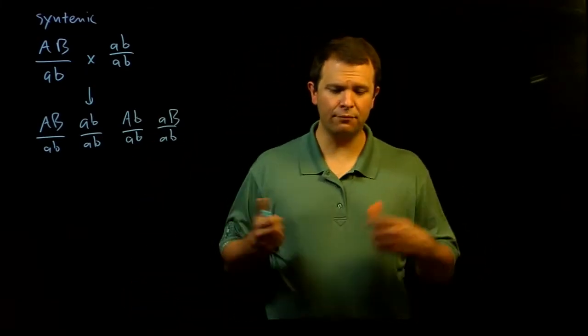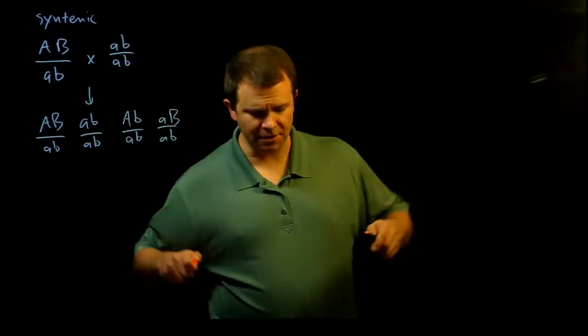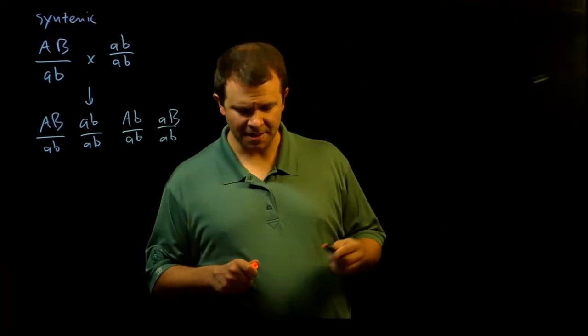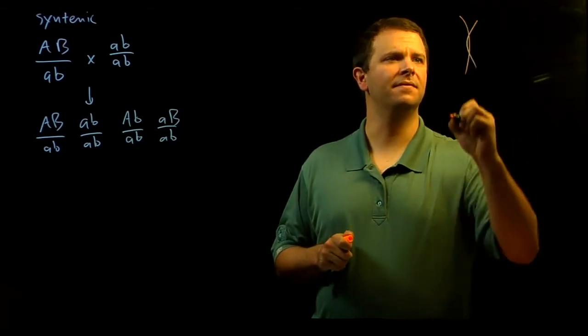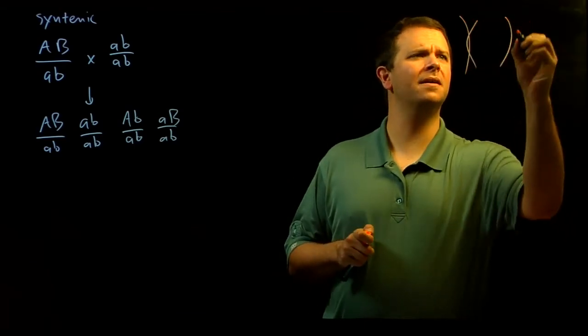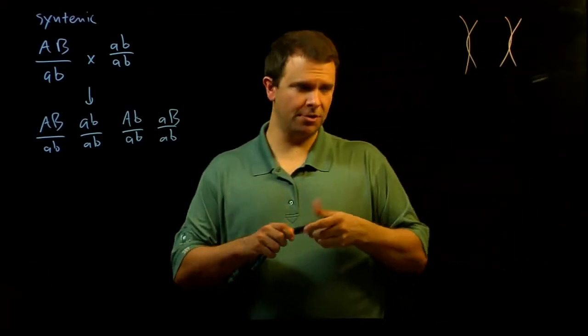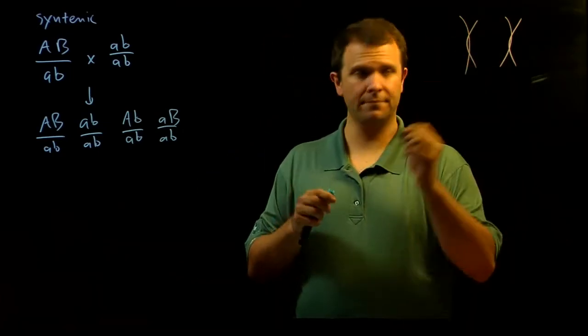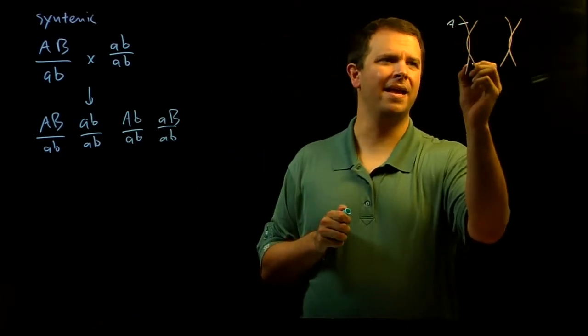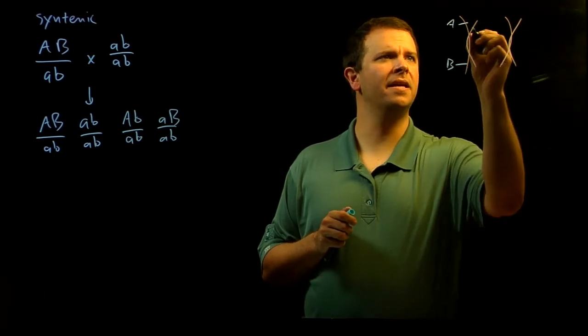homologous chromosomes line up like this. So if this is chromosome number one, here's chromosome number two. Let's imagine that A and B are here.